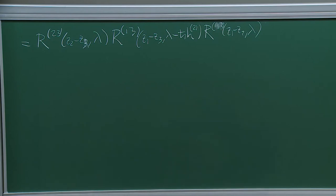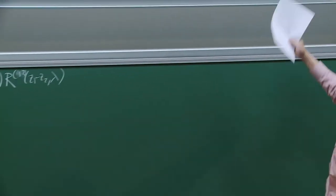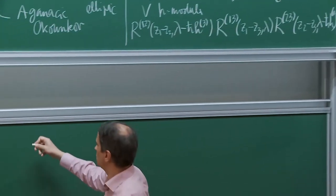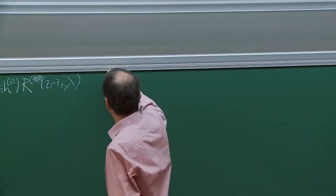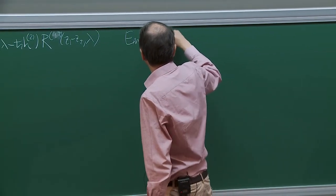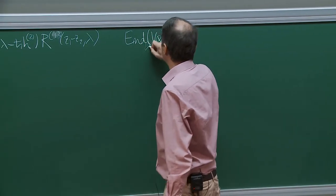If you don't have this lambda dependence, this is just the Yang-Baxter equation with spectral parameter used by Baxter in integrable models and Yang in scattering theory in two dimensions. The notation R_{12} acting on a weight-mu vector means R(lambda - h-bar mu) ⊗ identity — the dependence on the third variable depends on the weight of the vector you're acting on.